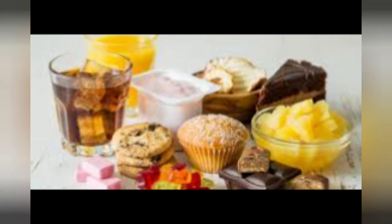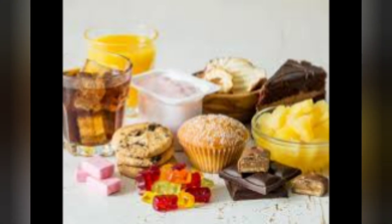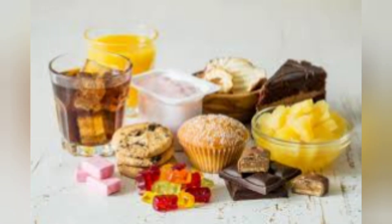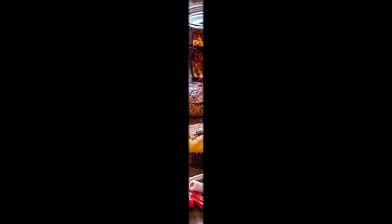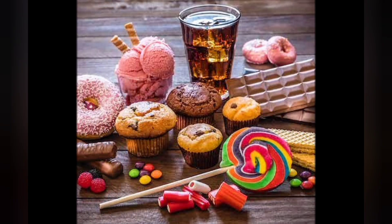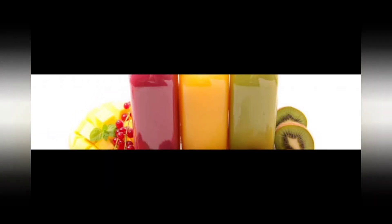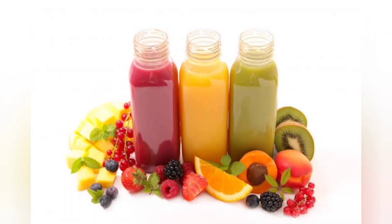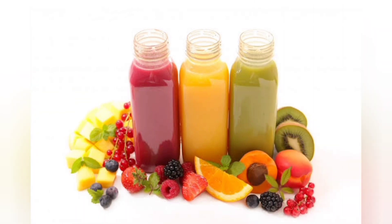Cut out sugary foods and drinks. Foods and beverages high in refined sugars and carbohydrates can boost your uric acid level. Stay away from sugary candies, sodas, and baked goods — especially those that contain high fructose corn syrup. Even naturally sweet fruit juices can affect your uric acid levels.